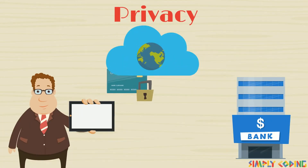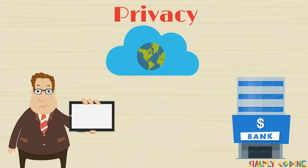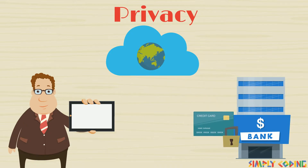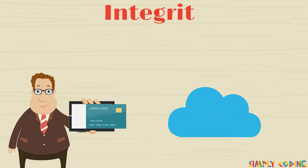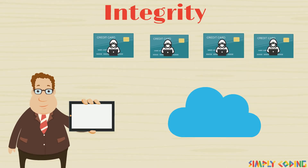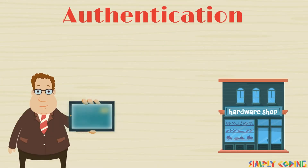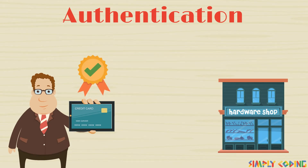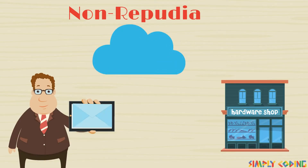These include privacy, that is, the personal details that should be kept confidential by merchants online. Integrity — there should be no tampering with the information shared by the buyer. Authentication — there should be proof of identification that the buyer is real, and also the merchant needs to ensure that the products are real. Non-repudiation — this is to ensure that the message was indeed received.